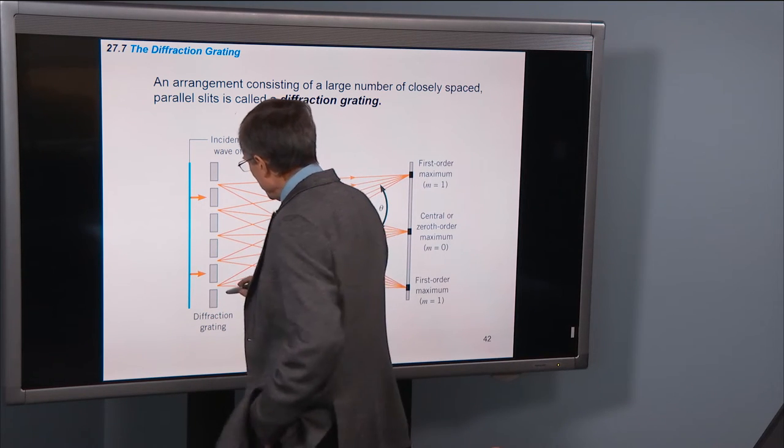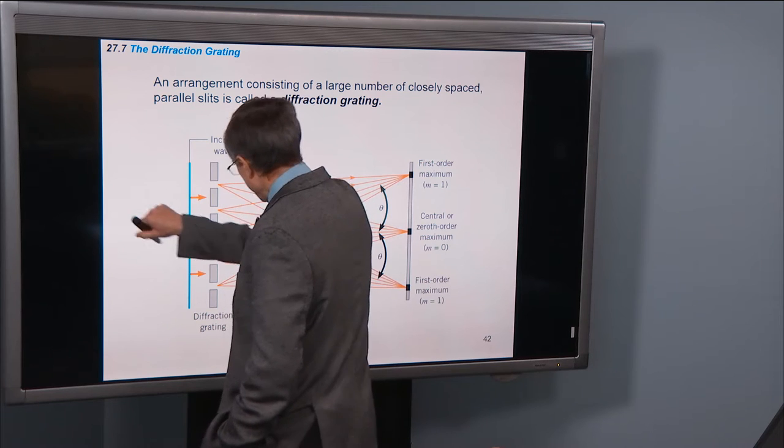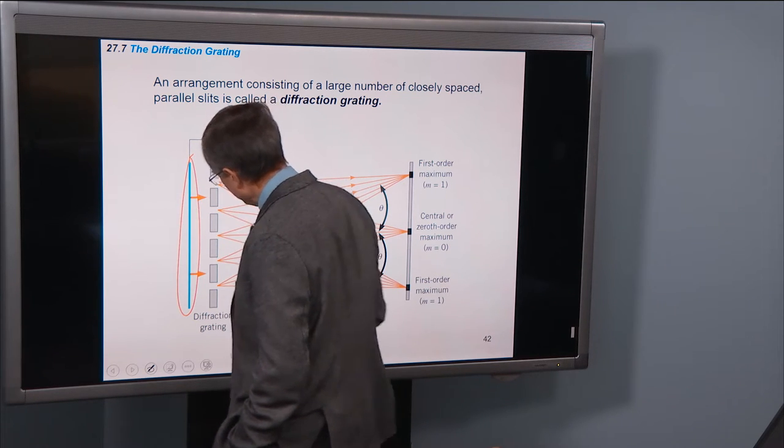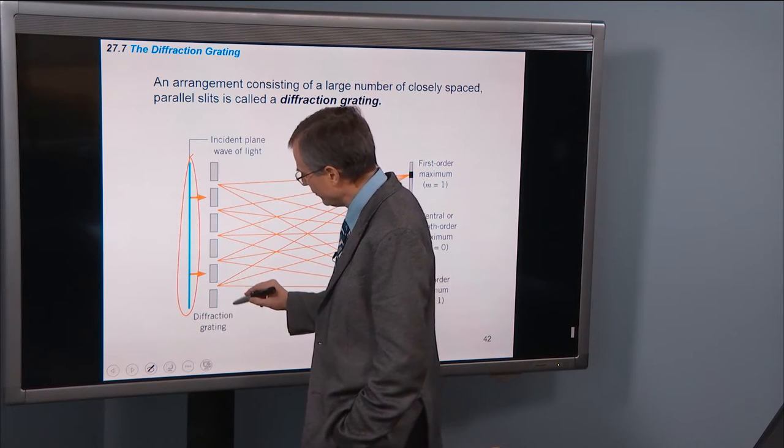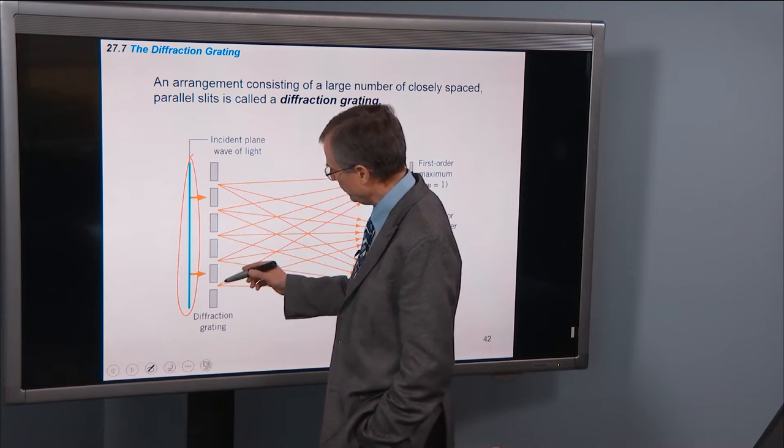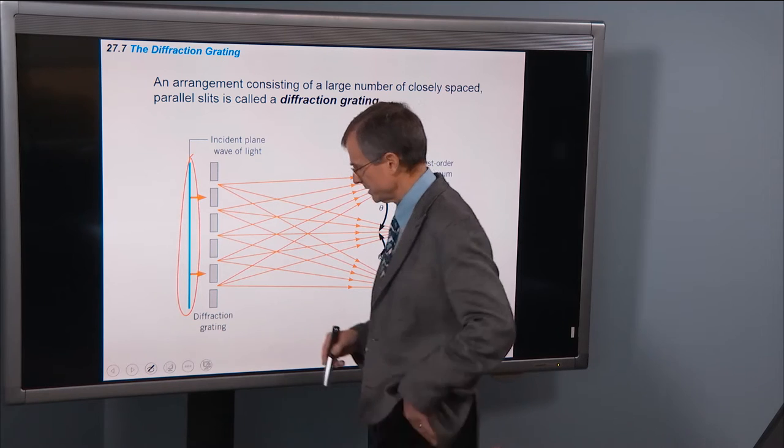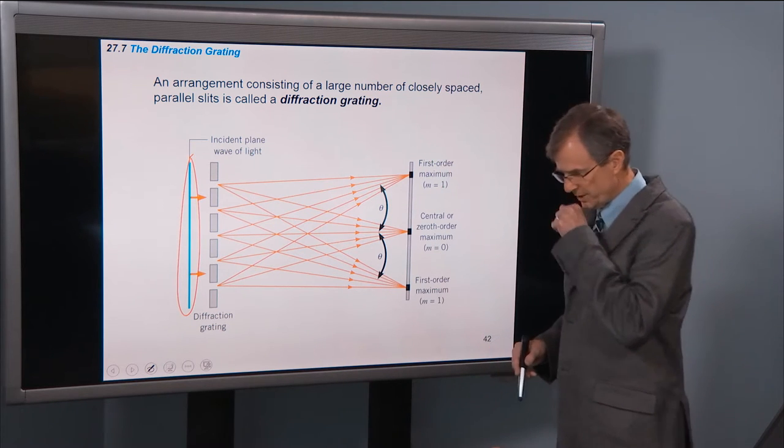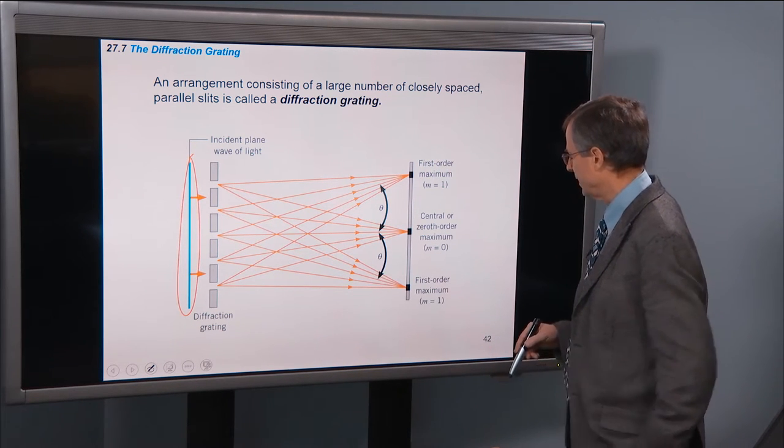So you've got light coming in, this blue here. We've got several slits. In this diagram, we've got one, two, three, four, five slits. But you can have tens of thousands of slits in various diffraction gratings.